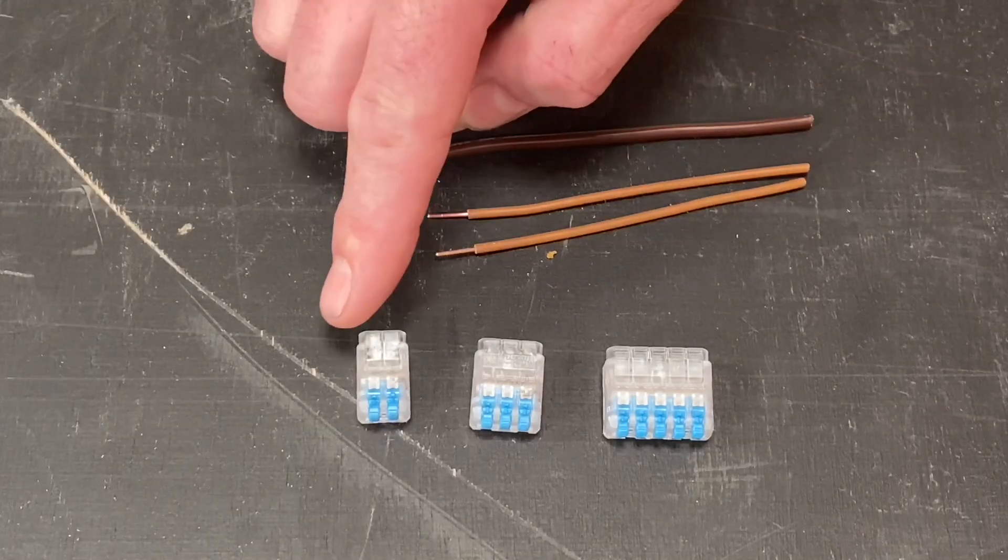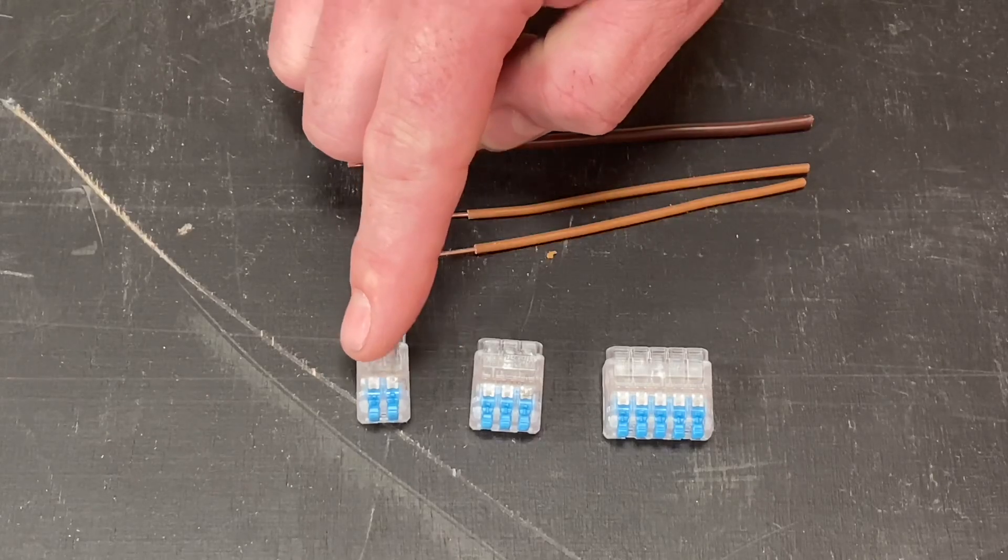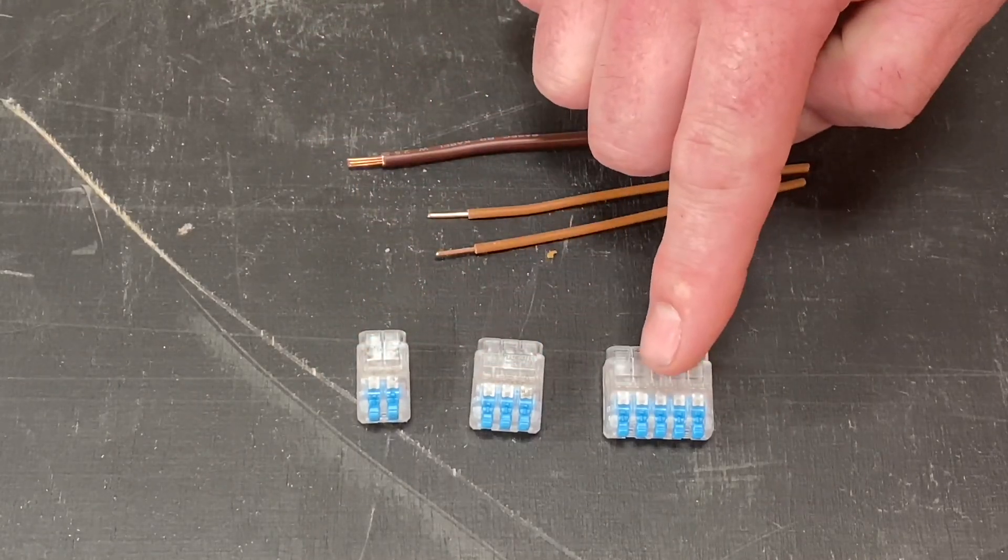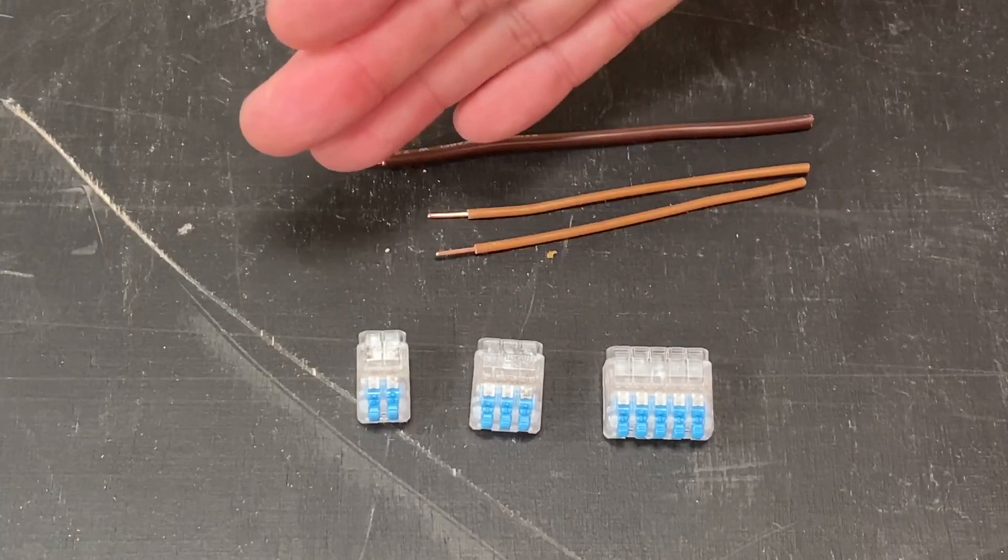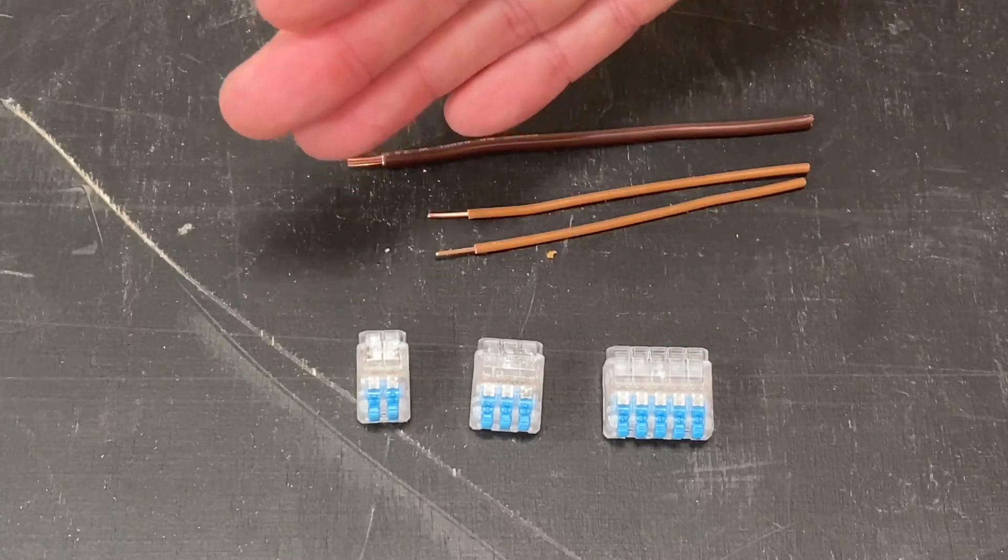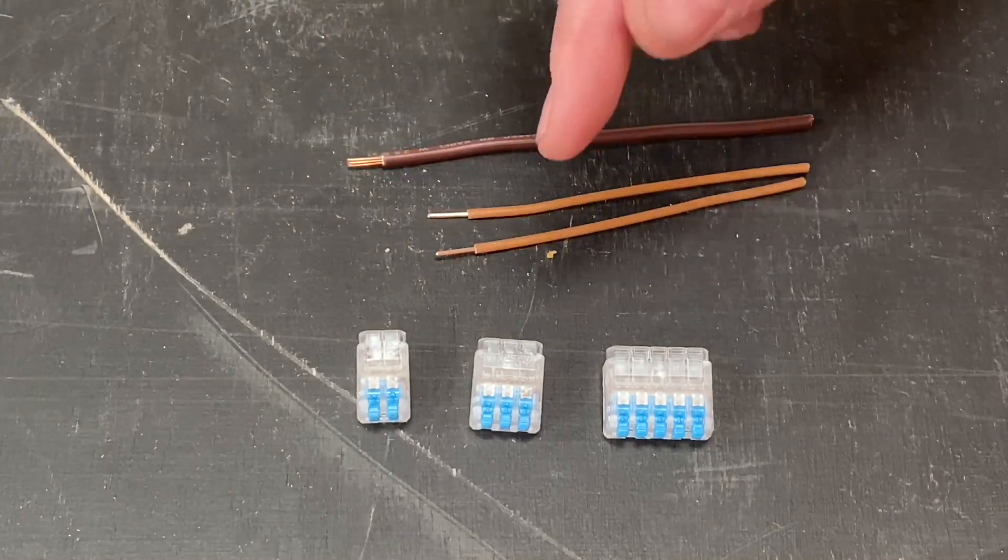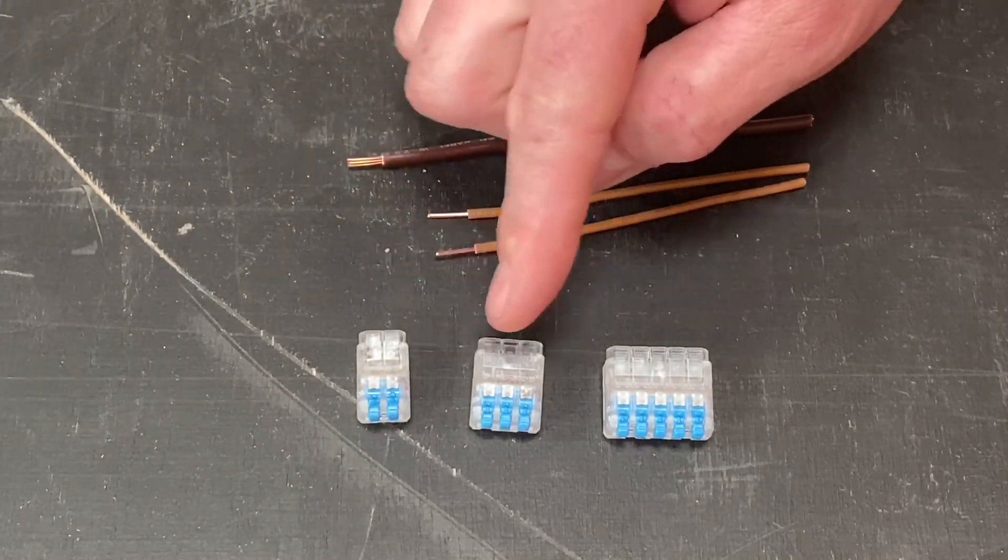Let's start with the lever variety of the In-Sure connectors. We've got a two conductor connector, a three conductor connector, and a five conductor connector. They go from 0.2 millimeters squared up to 2.5 millimeters squared cables and cover fine stranded, stranded, and solid copper, and they're rated at 24 amps each.